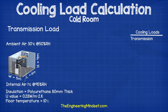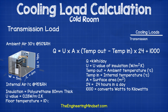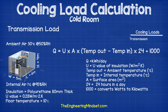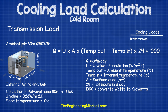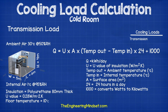The manufacturer should tell you what the U-value is for the insulation panels; if not then you will need to calculate it. To calculate the transmission load we'll use the formula: q equals U multiplied by A multiplied by (temperature out minus temperature in) multiplied by 24, then divided by 1000. The U-value we already know. A is the surface area for the walls, roof and floor. The temperatures we already know. 24 is the hours in a day and we divide by 1000 because we want the answer in kilowatts.